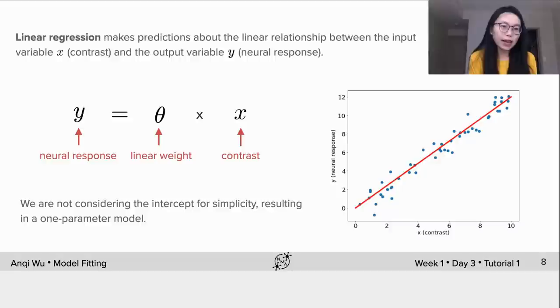The only parameter left is the linear weight denoted as theta. The red line here is the linear model we want to estimate that fits all the data. So the task of fitting a linear model would be to figure out what this theta is.